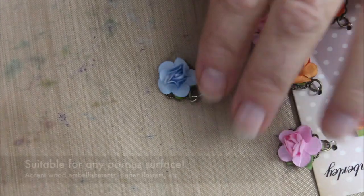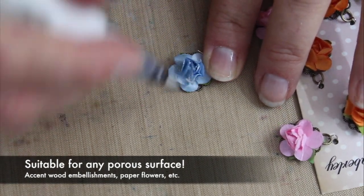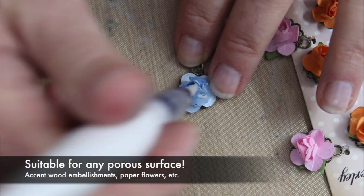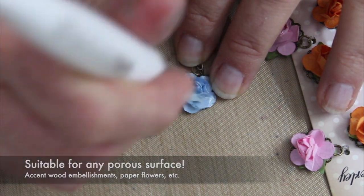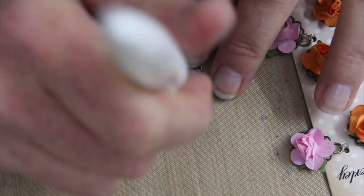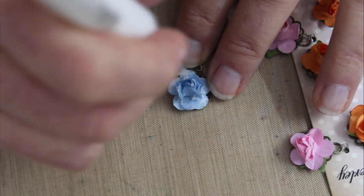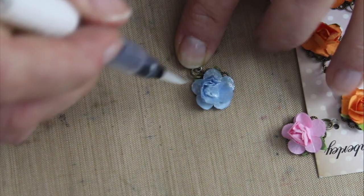Don't forget you can also use these on any porous surface - things like paper flowers, wood bits, cardstock, burlap, anything that is porous. As you can see here, I'm actually adding a little bit of glimmer shimmer to this little tiny flower and it looks so much nicer with some shimmer on it.